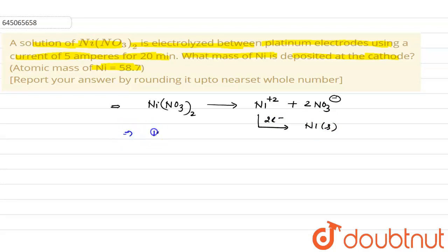And we know very well that one faraday is equal to one electron, means for deposition of one mole of nickel we need two faraday electricity.